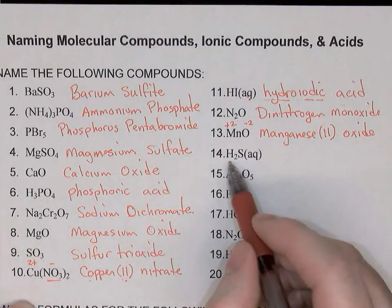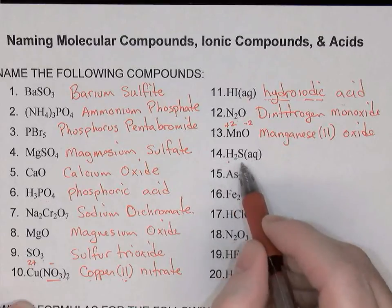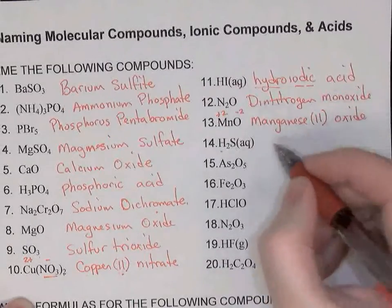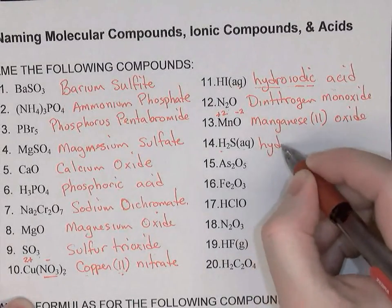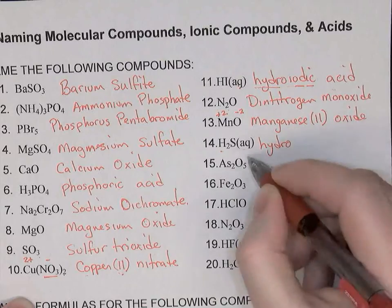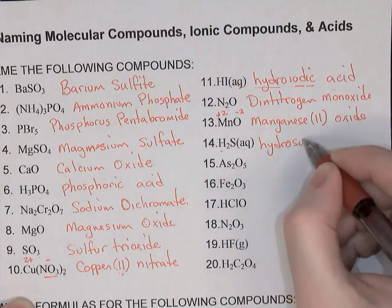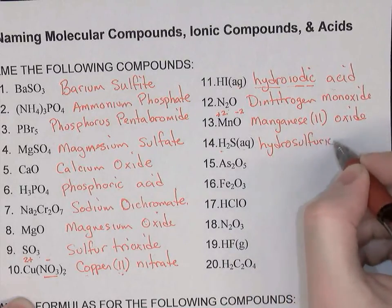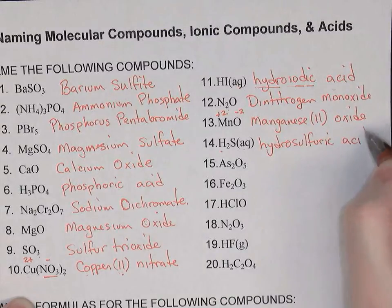Next we have another acid — it's aqueous and binary — so its name will be hydro, then sulfur becomes sulfuric, and then acid.